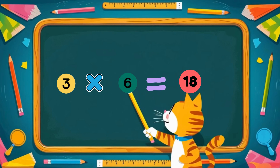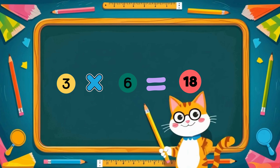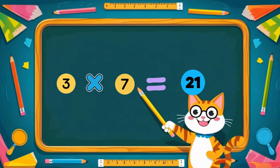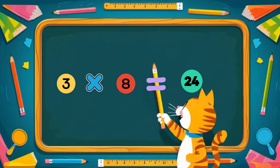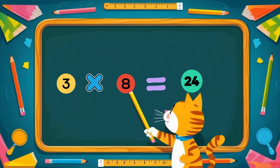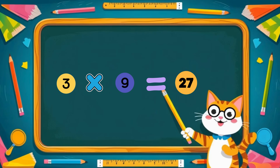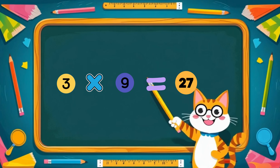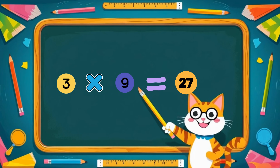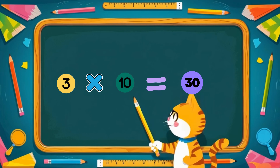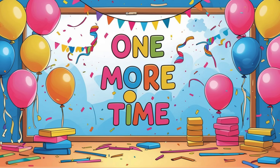Three times six is eighteen. Three times seven is twenty-one. Three times eight is twenty-four. Three times nine is twenty-seven. Three times ten is thirty. Awesome!